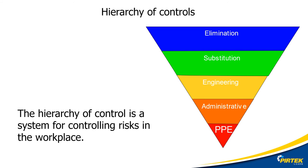We've identified the risk or hazard. Now we've got to work out how we're going to control this risk or hazard. The hierarchy of control is a system commonly used for controlling risks in the workplace. It is a step-by-step approach to eliminating or reducing risks. It ranks controls from the highest level of protection and reliability through to the lowest.